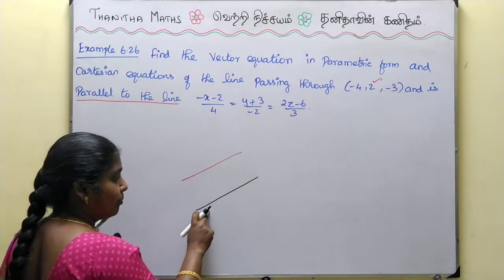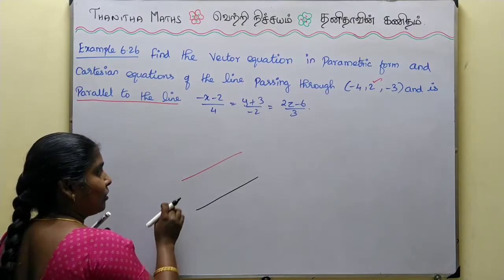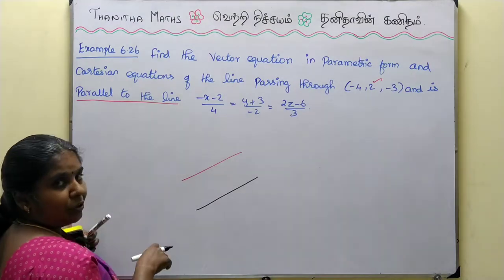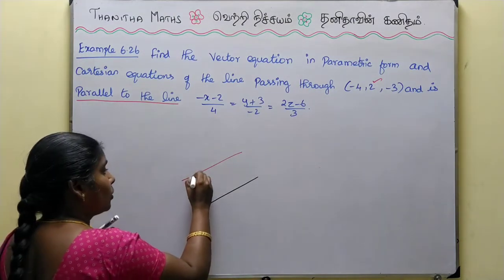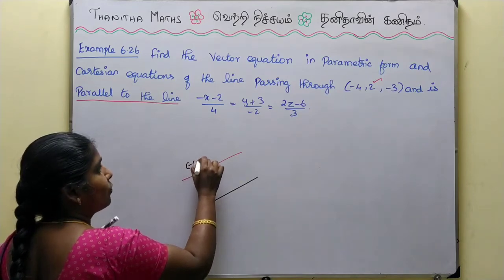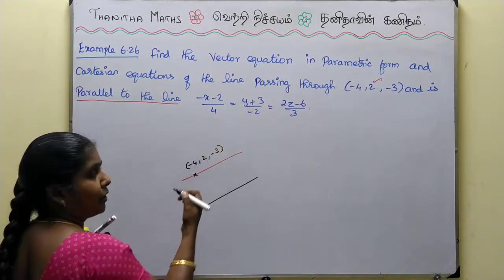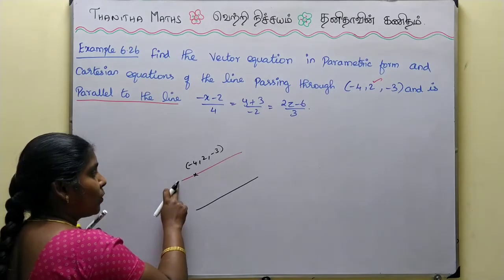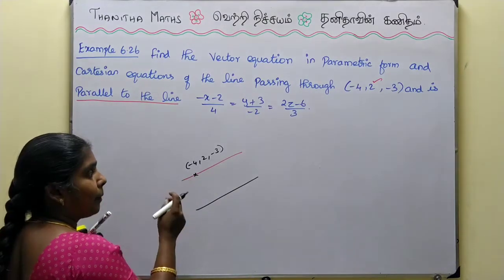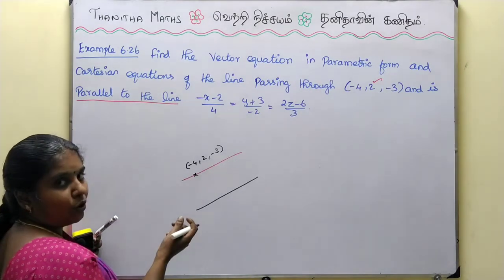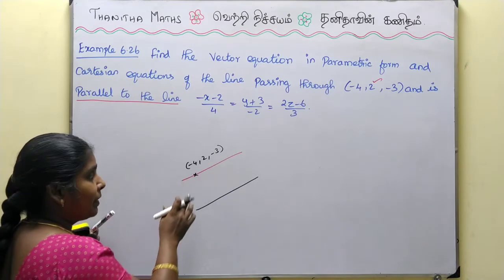From this line, we will get the point (-4, 2, -3). Once we get the point and a parallel vector, we can get the line using these two elements.